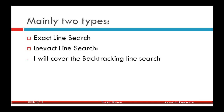In the exact line search, we find the step length t that minimizes f(x + t·Δx) as a function of t. In the inexact line search, we approximately minimize f(x + t·Δx) — we don't need the exact minimizing t, we just need a t that decreases the function value by a certain amount. These methods are known as inexact line search methods, and we will cover the backtracking line search algorithm.